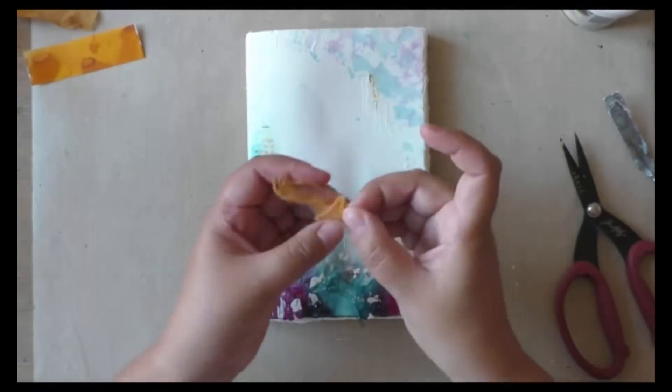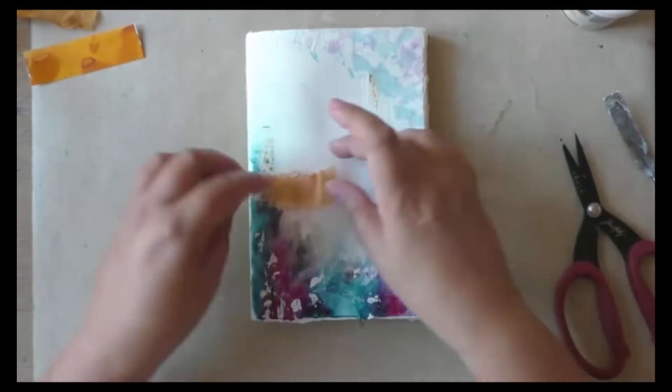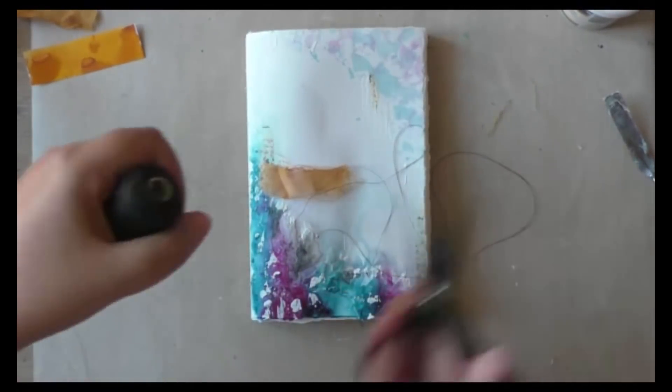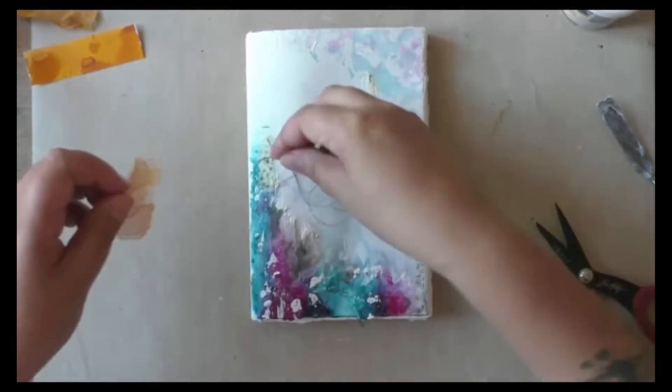This is cambric that has been colorized using Quinacridone Gold Fluid Acrylic to give it this rusty shine. And this will be the base for my wording.